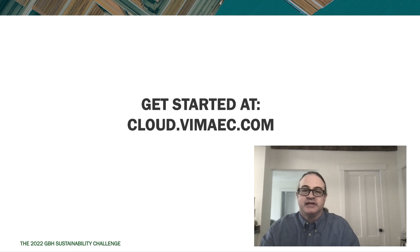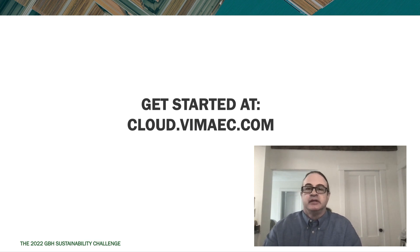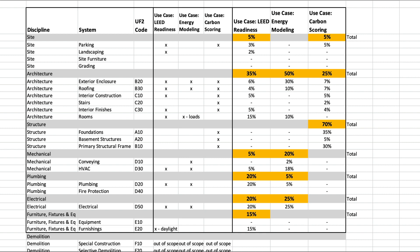Now, for those of you with significant background in Revit, I'm going to show you the scoring methodology so you understand how the data in the project was weighted to produce the readiness report. This is completely optional and is just here for those of you who want to understand the methodology. What you see in front of you is the methodology for how we are scoring the various readiness use cases. On the left, you can see the discipline that appears in the reports and in Revit what system that is in the model, and for those that have Uniformat codes, the top-level Uniformat code for that system.